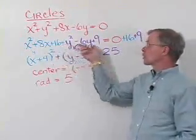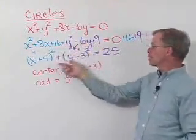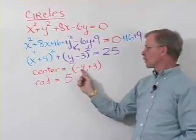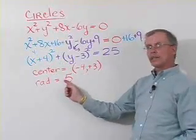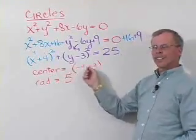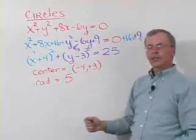So completing the square with both x's and y's will help us get the format that will tell us what the center is. And once we know the center and the radius, we can go ahead and find some points that would help us get a sketch of our circle.